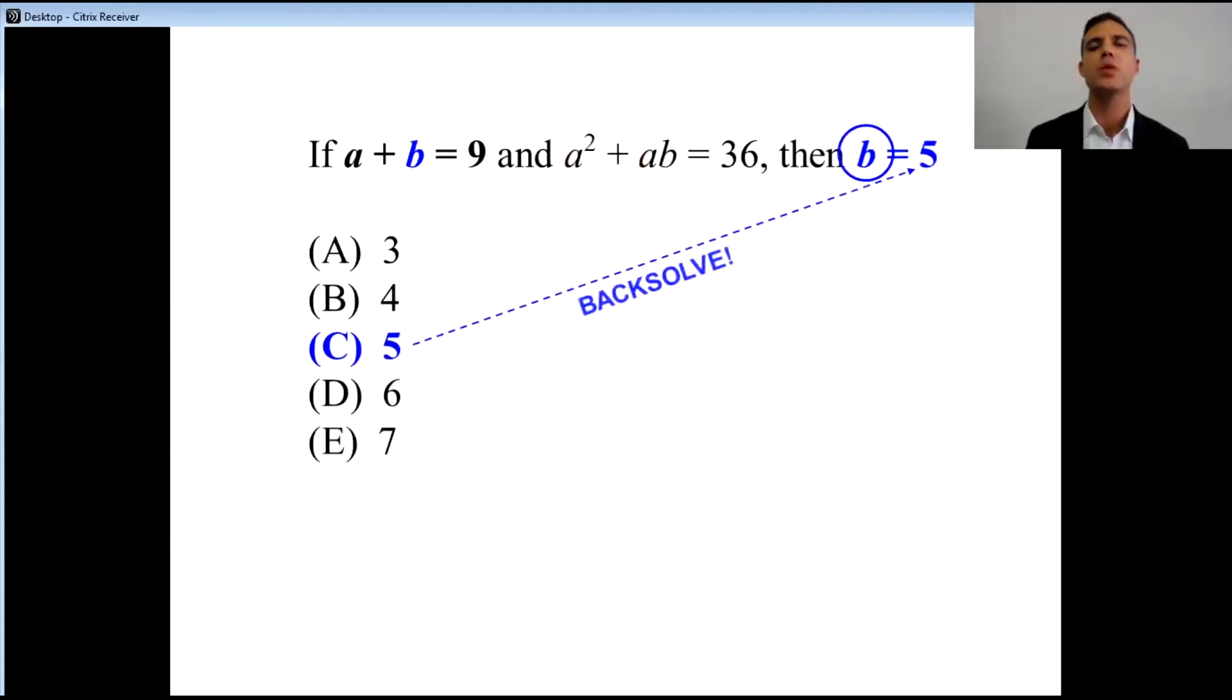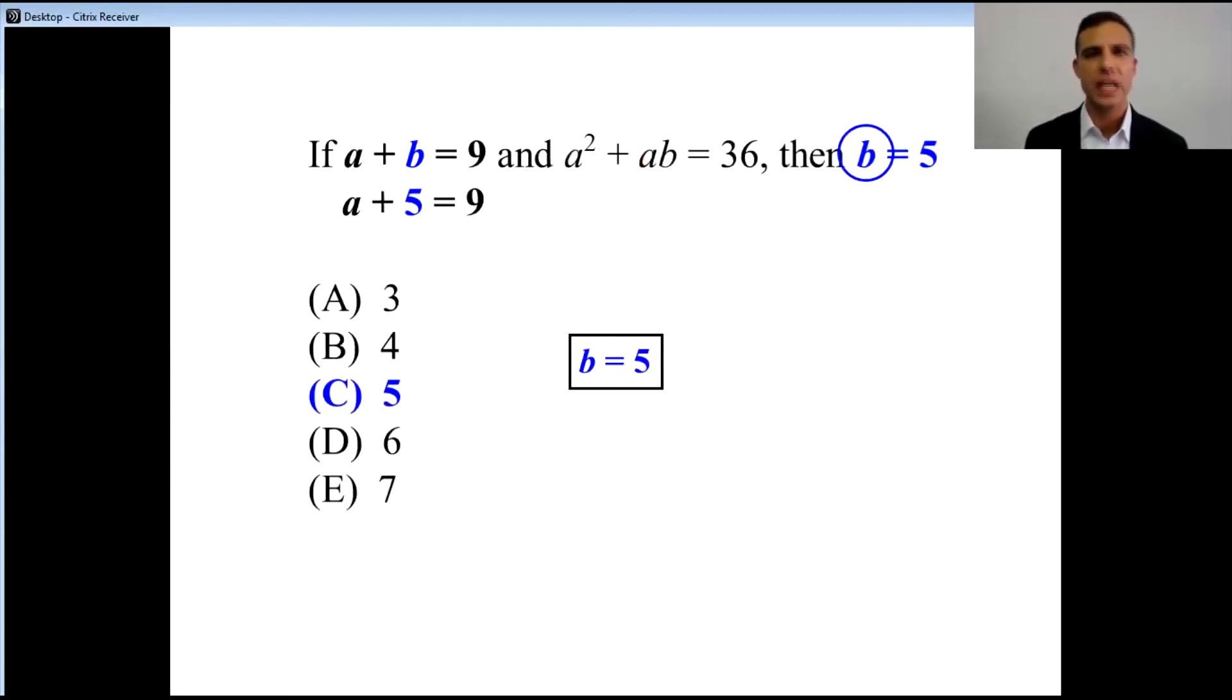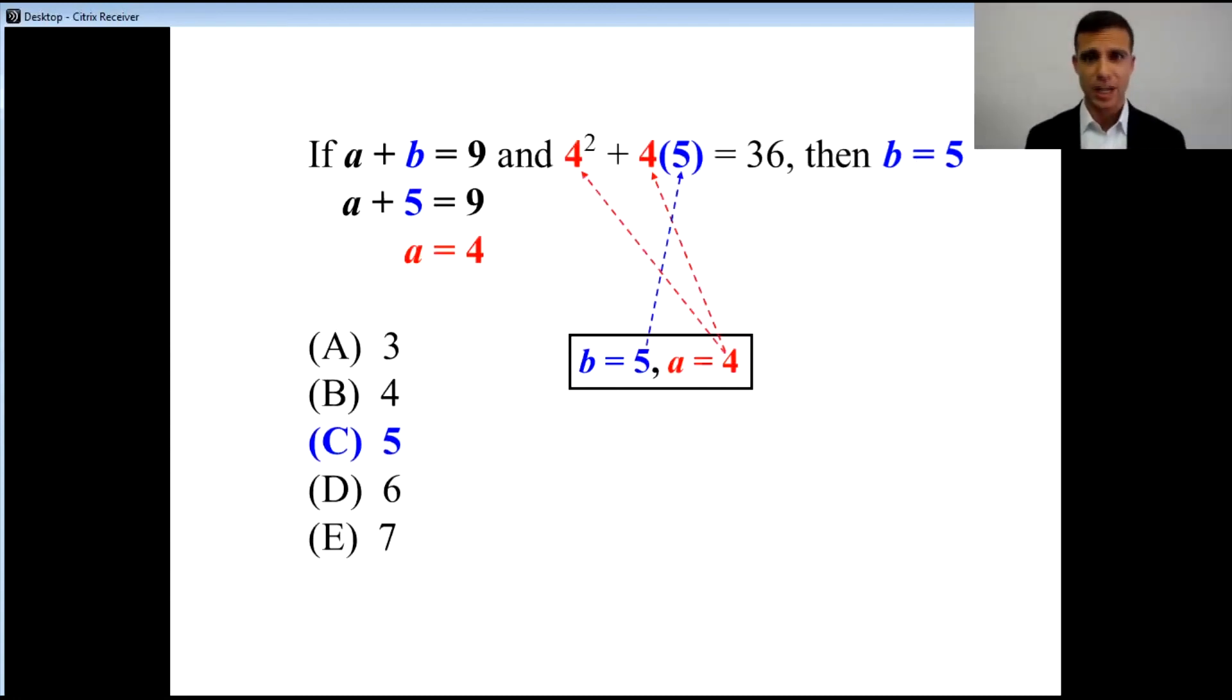Why does backsolve seem so easy? Because we have a real number. When we go through and we've got b equals 5, this problem becomes a simple, concrete exercise of arithmetic. This is why backsolve can be so powerful. Questions that are often difficult involving a lot of algebra, if they need a single value in the end, backsolve might be your solution. We put it in, you solve to make sure it works, and you're done.